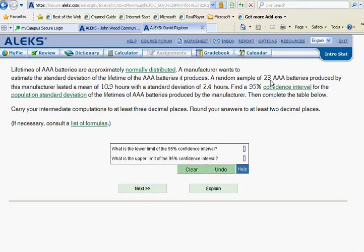A random sample of 23 AAA batteries produced by this manufacturer lasted with a mean of 10.9 hours with a standard deviation of 2.4 hours. Find a 95% confidence interval for the population standard deviation of the lifetimes of AAA batteries produced by the manufacturer, and then complete the table below.